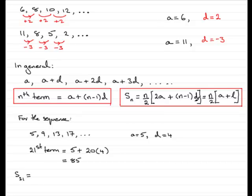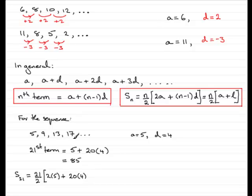Using the first formula, n would be 21, so that's 21 over 2, all multiplied by twice the first term — so 2 times 5 — plus (n minus 1) times the common difference. With n equal to 21, n minus 1 is 20, and the common difference is 4. If we work this out, what you get is 945.